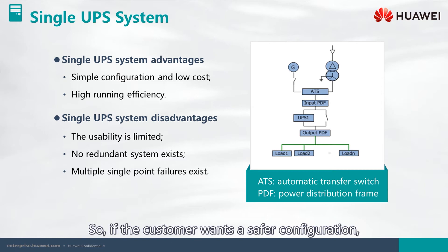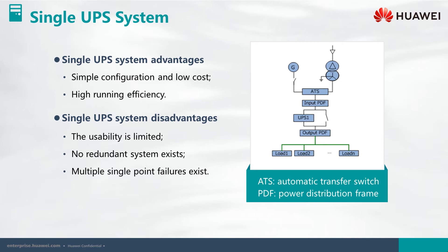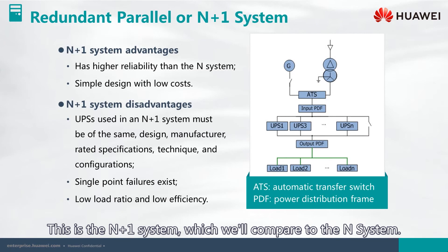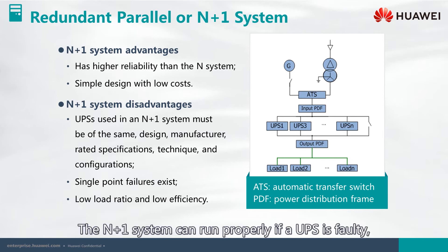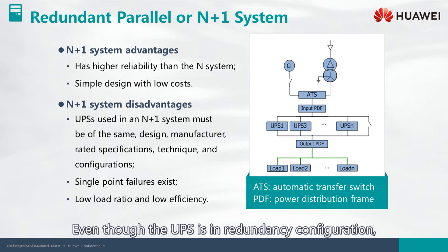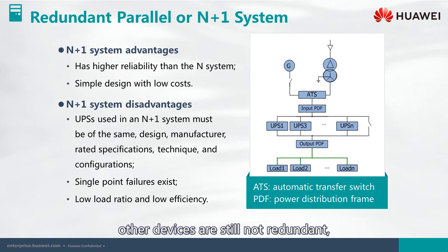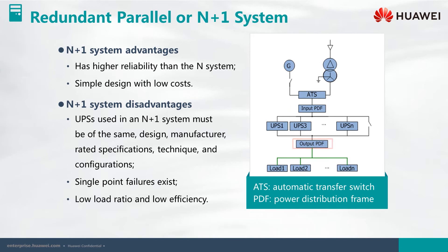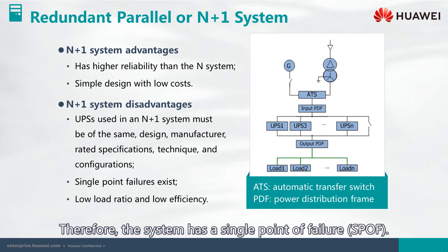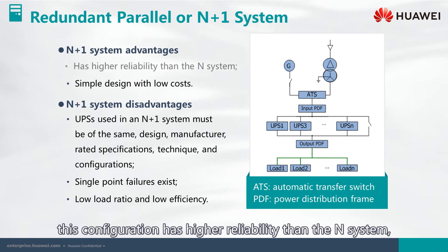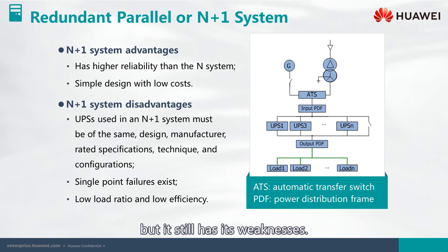If the customer wants a safer configuration, we can recommend the N plus one system. The N plus one system can run properly if a UPS is faulty, so it's more reliable than the N system. Even though the UPS is in redundancy configuration, other devices are still not redundant, such as the ATS, input power distribution frame, and output power distribution frame. Therefore, the system has a single point of failure, SPOF. This configuration has higher reliability than the N system, but it still has its weaknesses.